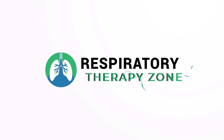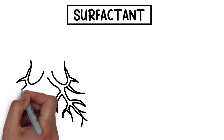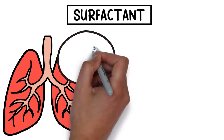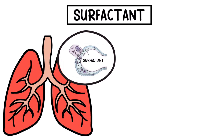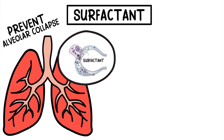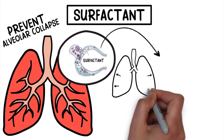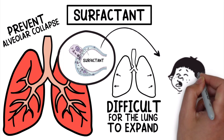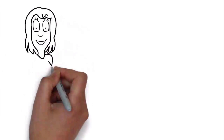First and foremost, let's talk about surfactant. Surfactant is a substance that forms a layer over the surface of alveoli in the lungs to reduce surface tension and prevent alveolar collapse. Without this coating, it's difficult for the lung to expand, which makes it difficult for an infant to breathe.